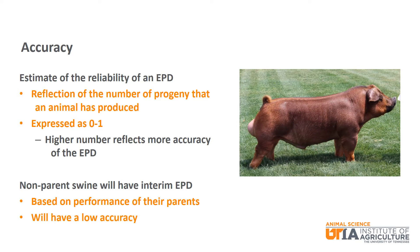The accuracy of an EPD is an estimate of its reliability, or the confidence that we can have in that value. It is expressed as a number between 0 to 1, with a higher number reflecting more accuracy. This brings up a great question: how do animals that have not had any offspring already have EPDs? They are assigned interim EPDs that are based on the performance of their parents. These values will have a very low accuracy value but do give an indication of expected future performance of their offspring. We will now highlight a few of the more common EPDs, what they mean and how they are used.